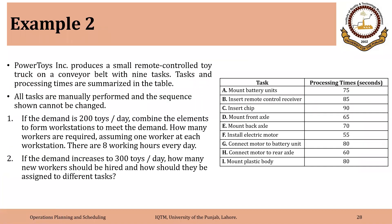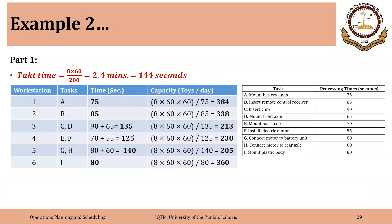Now in question 2, it is given that if the demand increases to 300 toys per day. So you could see here that these are the three workstations, 3, 4 and 5 that are having capacity less than 300. So we have to increase the capacity of these three workstations, 3, 4 and 5 in order to meet the demand.